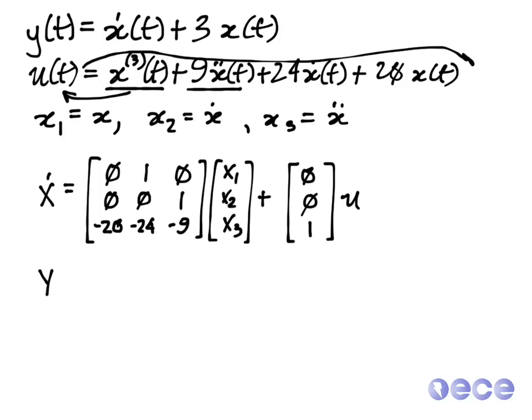And Y is going to be equal to x₁ dot plus 3x. So x₁ dot is equal to x₂. So we're going to have 3x₁ plus 1x₂ plus 0x₃. So this gives us our controllable canonical form.